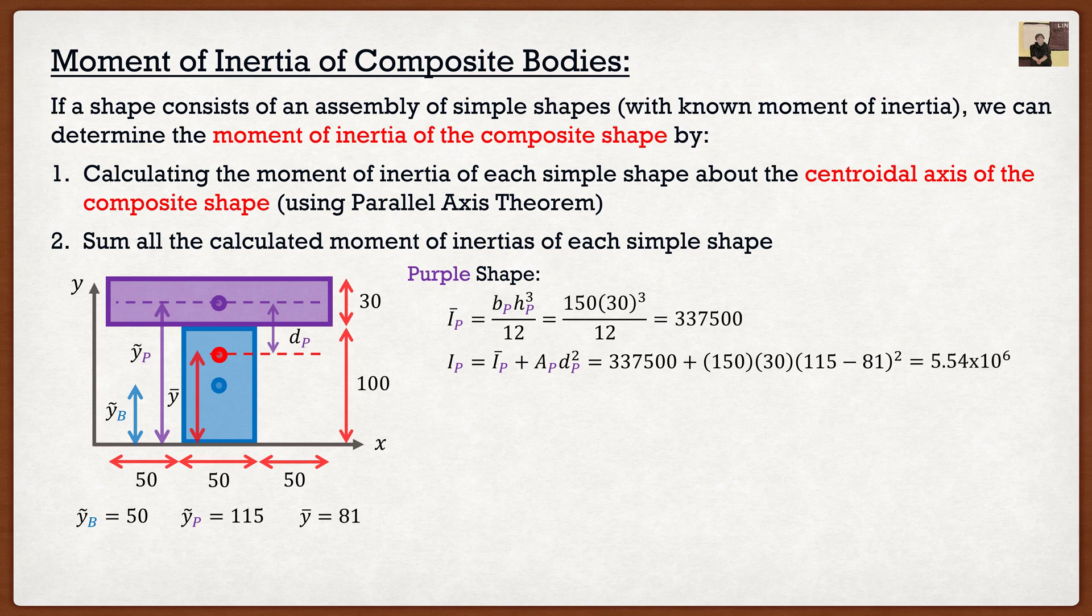And we can repeat this process actually with the blue shape. So we know that the blue shape is also just a rectangle. So we can find its moment of inertia around its own centroidal axis, which is going to be that blue axis there. Calculate that using base times height cubed divided by 12. And then again,